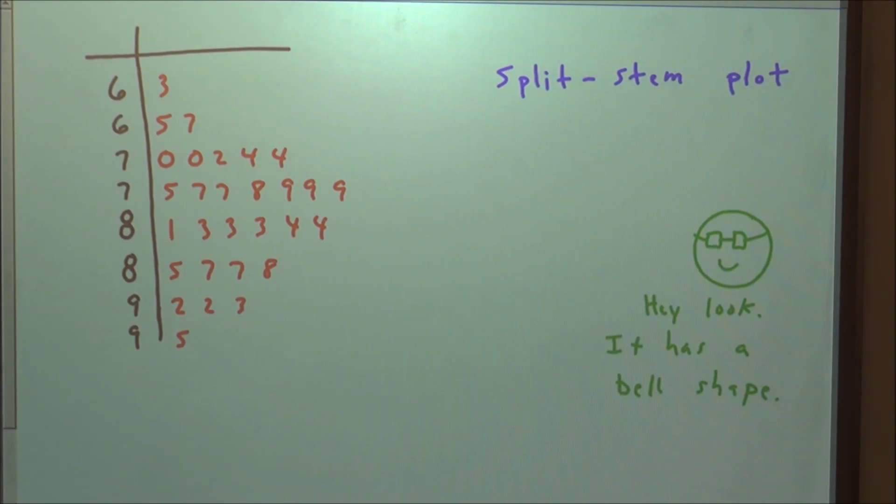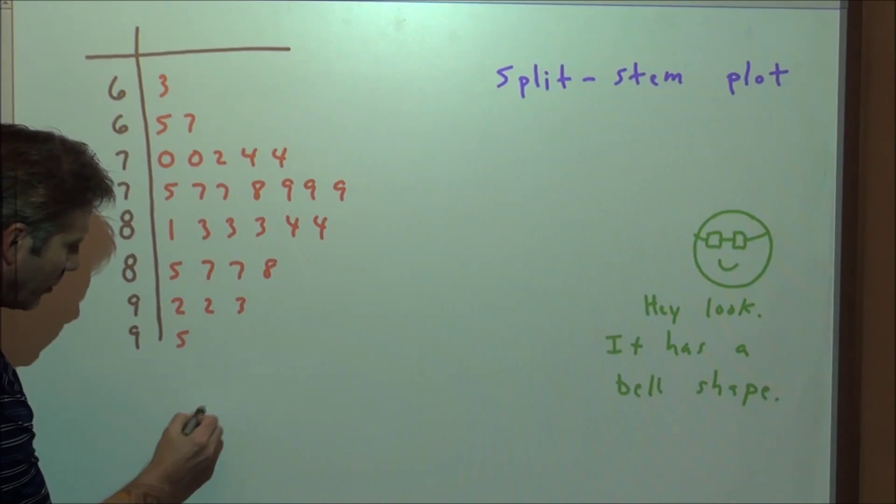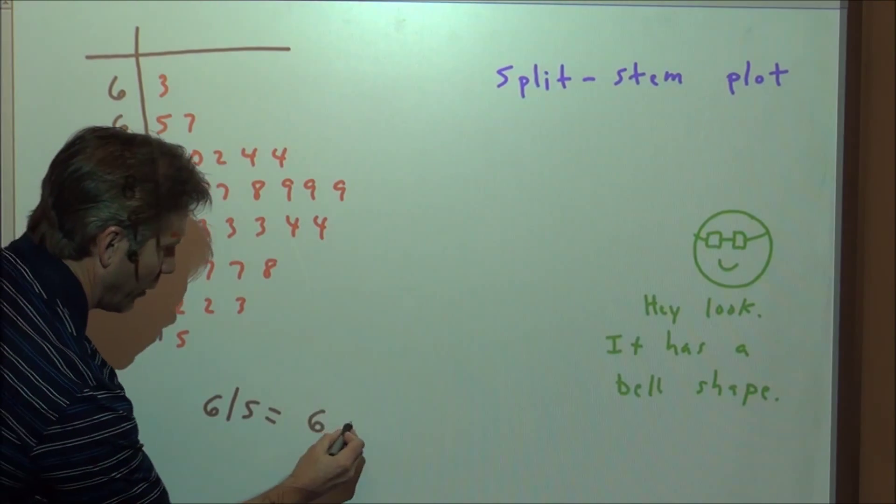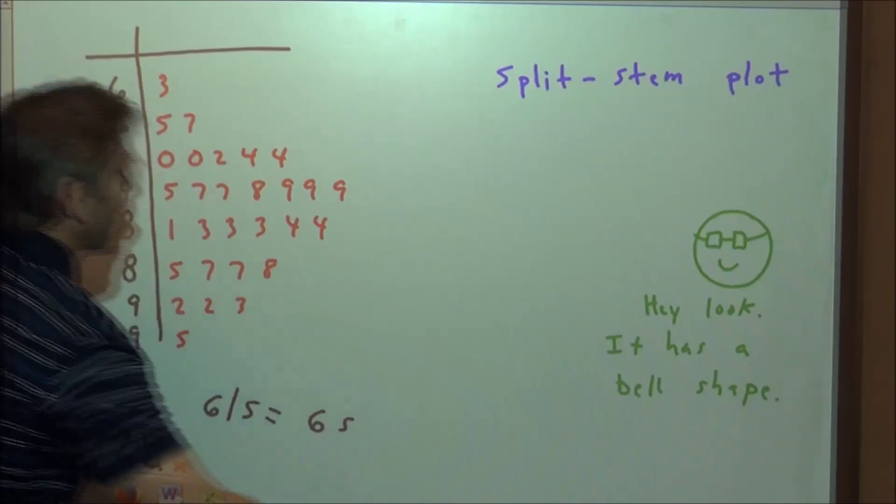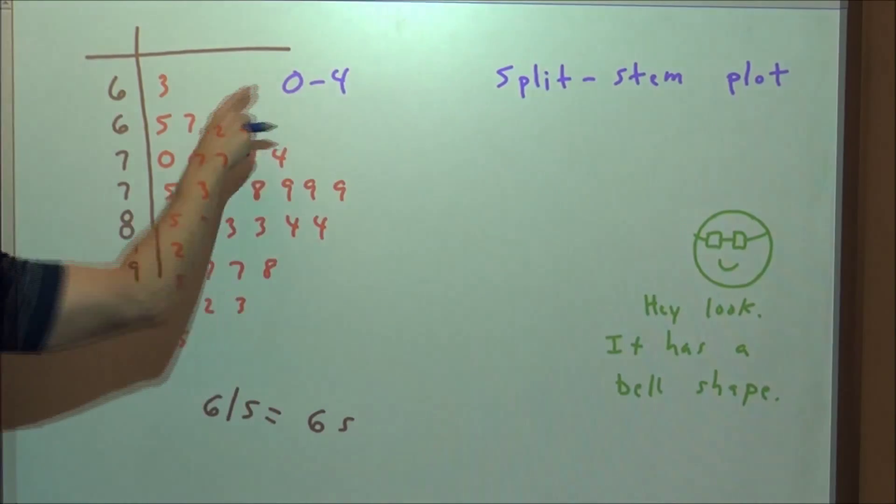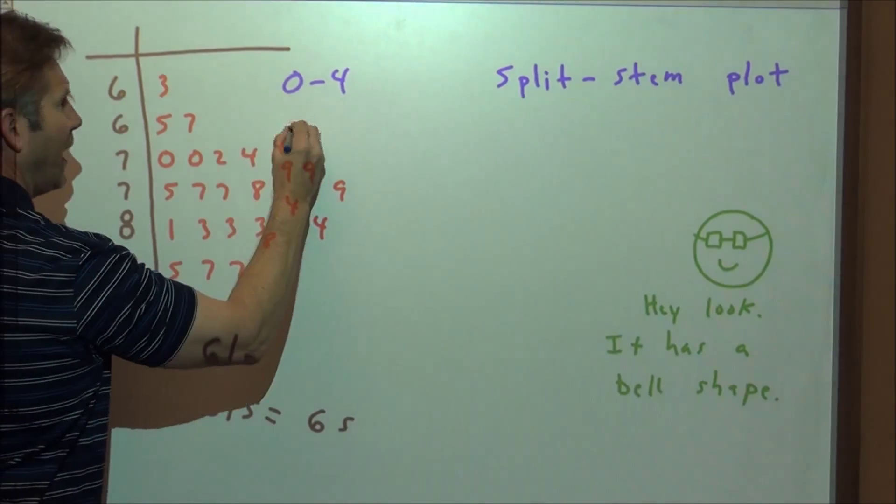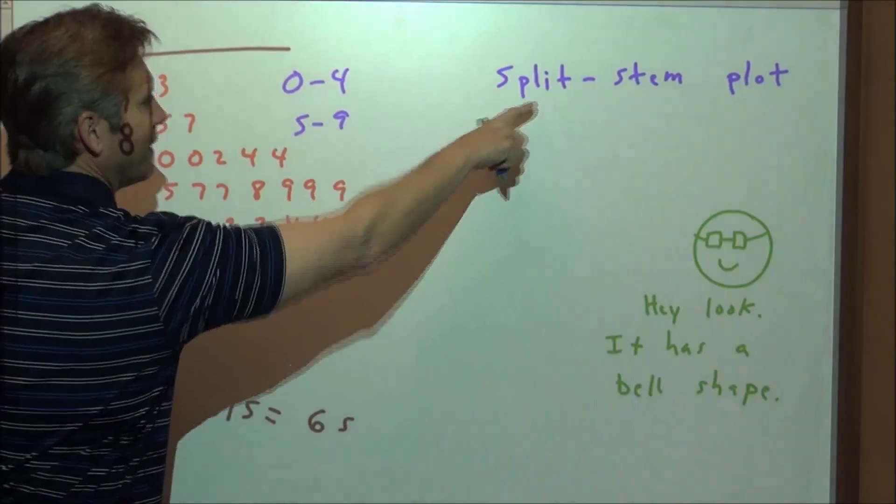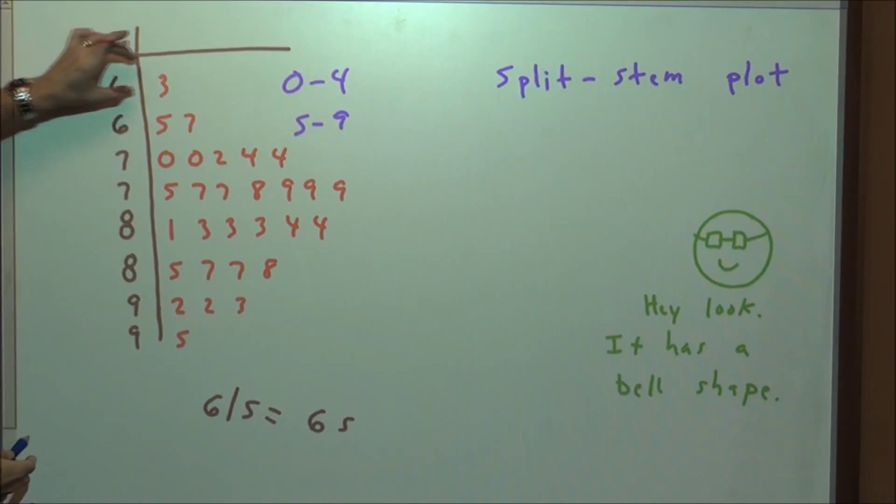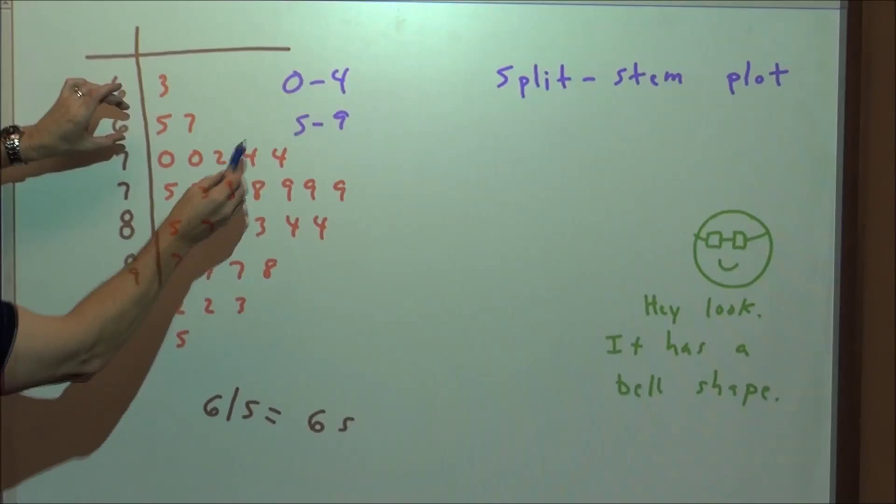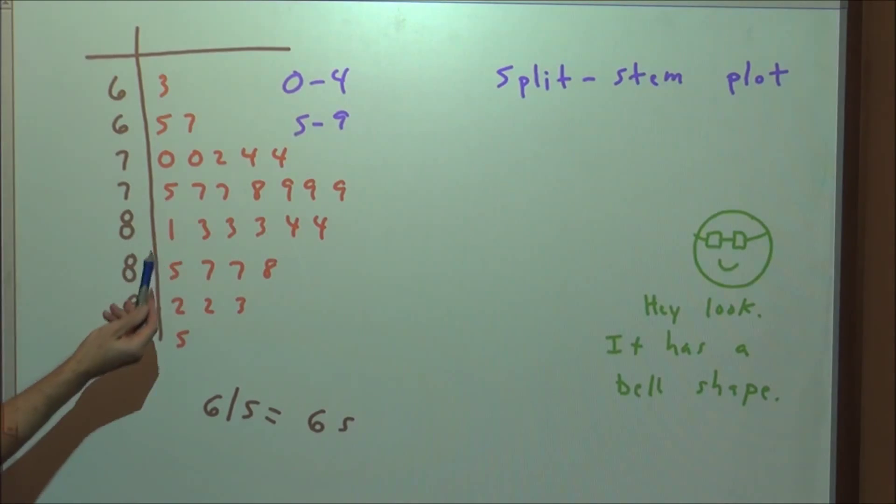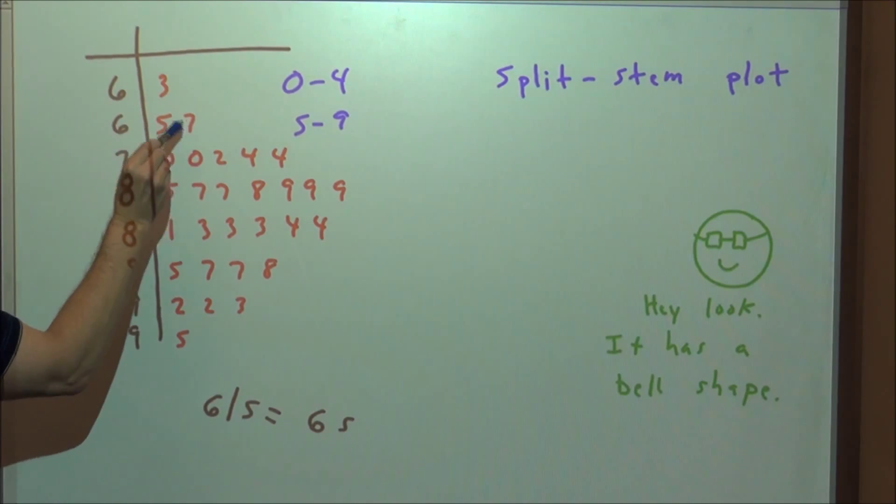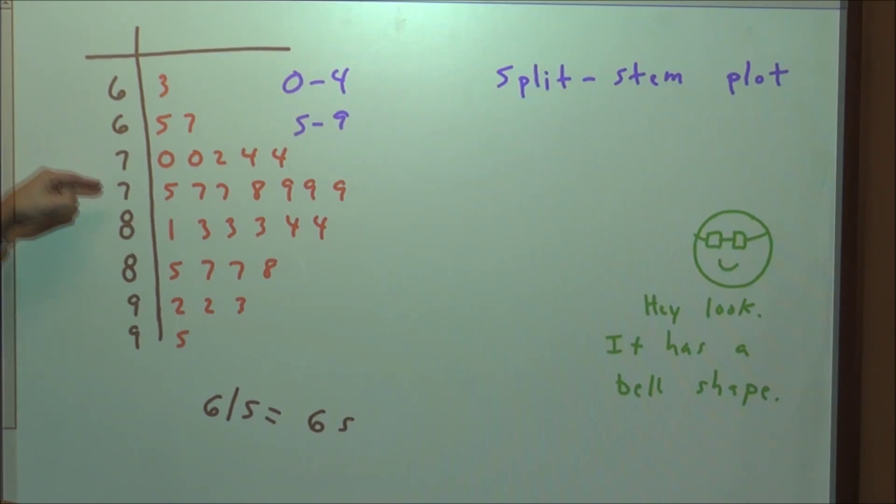We can do a split stem plot. So in this case, if you see that there's two sixes, these might be out of 100 points. So maybe a 6 slash 5 is equal to a score of 65 out of 100. Well, any score that ranges from 60 to 64, the 0 through 4s will go in this stem, and the 5 through 9s will go in this stem. That's why it's called a split stem. So we can have 5 of the 10 scores in the 60 range here, and another 5, the 65, 66, 67, 68, 69. Those other 5 out of the 10 possible scores that are in the 60s range can go here. 70 through 74, 75 through 79, 80 through 84, 85 through 89.